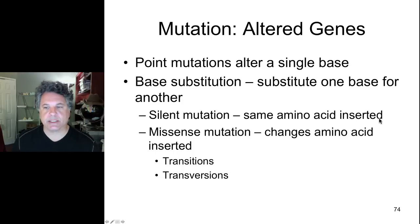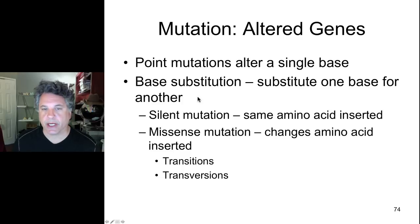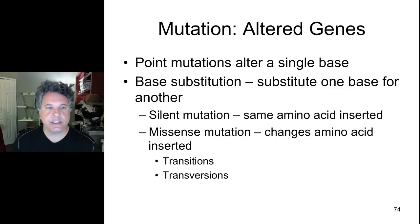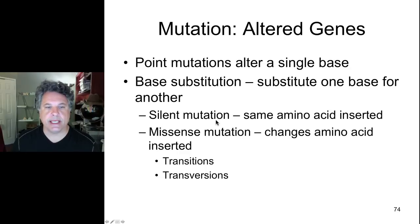You might ask: how can you change the genetic code and yet insert the same amino acid? The answer, as you will recall, is that the universal genetic code is degenerate — there are multiple codons that can encode a single amino acid. So a base substitution can generate a silent mutation in which the nucleic acid sequence of the gene is altered but the protein product is not altered; the same amino acid is inserted.